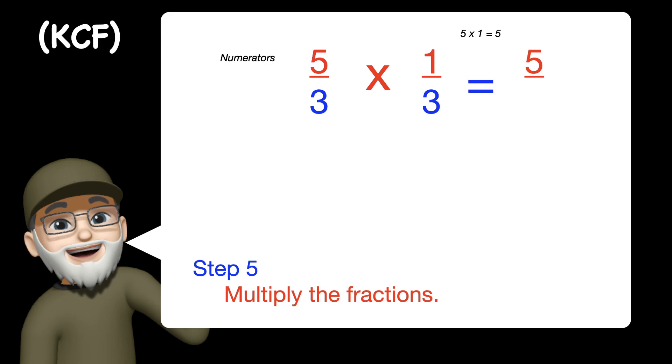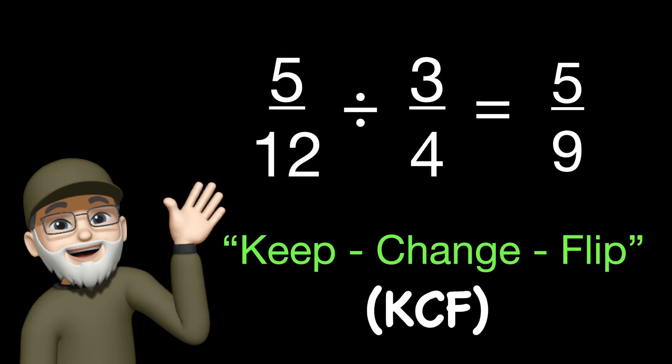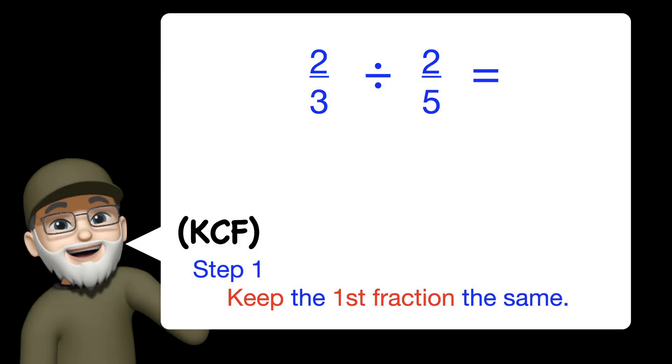Multiply, the top would be 5 times 1 is 5, and the bottom 3 times 3, and that's where we got the 5 ninths for our first problem using the keep, change, and flip strategy for dividing by fractions.